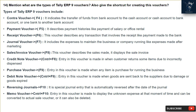Question 14: What are the types of Tally ERP9 vouchers and their shortcuts? Types include: Contra Voucher (F4) — indicates the transfer of funds from bank account to cash account, cash account to bank account, or one bank to another. Payment Voucher (F5) — describes payment histories like payment of salary or office rental. Receipt Voucher (F6) — describes any transaction involving receipt, like payment made to the bank. Journal Voucher (F7) — includes expenses to maintain business operations, like expenses made after marketing.